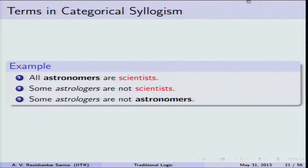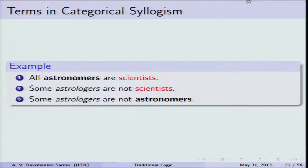An example of a categorical syllogism: 'All astronomers are scientists; some astrologers are not scientists; therefore, some astrologers are not astronomers.' Aristotle's theory of syllogism tells us how to determine whether the conclusion follows necessarily from the two given premises.